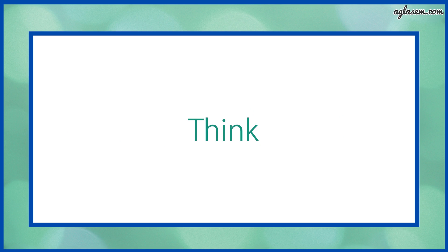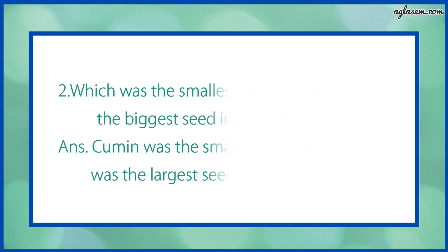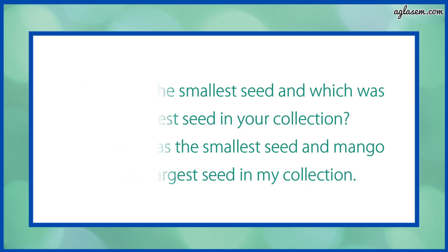Think. Question number 1 says: did you keep soap and cumin, i.e. jeera, in your list? Answer: soap and cumin i.e. jeera seeds were also taken in the list. Second: which was the smallest seed and which was the biggest seed in your collection? Answer: cumin was the smallest seed and mango was the largest seed in my collection.